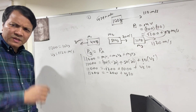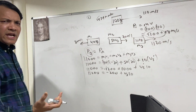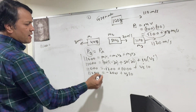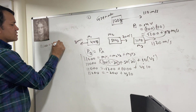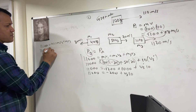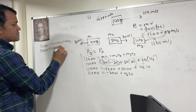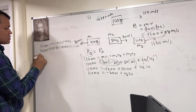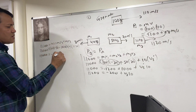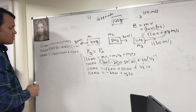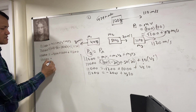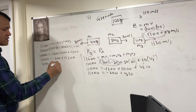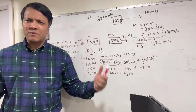Now we verify momentum is conserved: 11,000 = M1×V1 + M2×V2 + M3×V3 = 40×(−30) + 50×20 + 10×1,120 = −1,200 + 1,000 + 11,200 = 11,000. So 11,000 equals 11,000 — momentum is conserved. Momentum is always conserved in any type of collision.